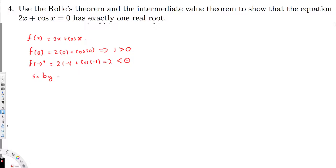Since f(-1) < 0 and f(0) > 0, by the Intermediate Value Theorem, f(x) has at least one real root between them.